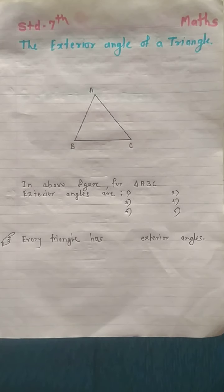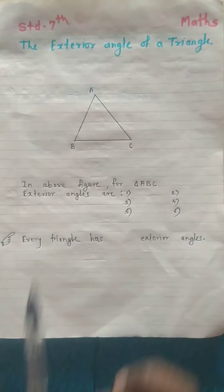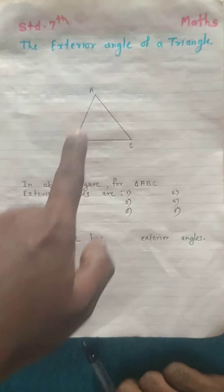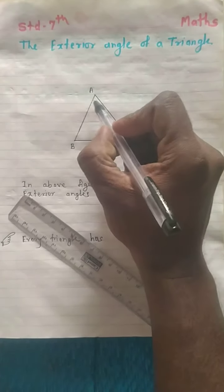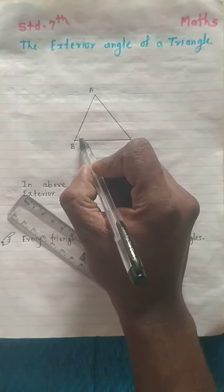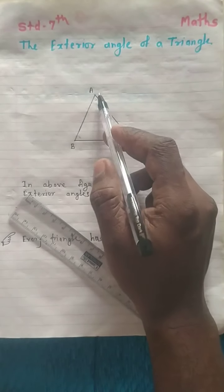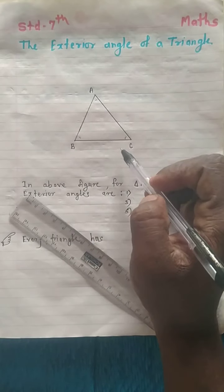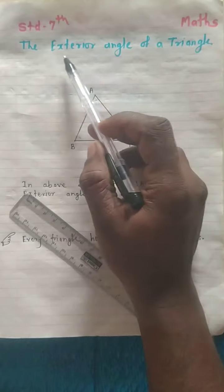Namaskar Vidyarthi Mitrano. Today we will learn about the exterior angle of a triangle. Suppose this is triangle ABC, where angle A, B and C are the three interior angles of triangle ABC. Now we will learn about the exterior angle.